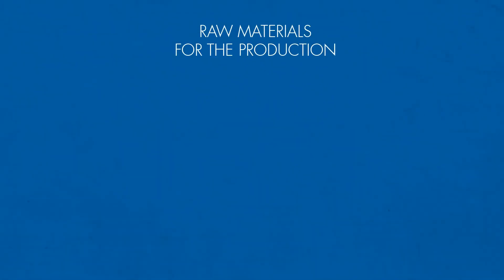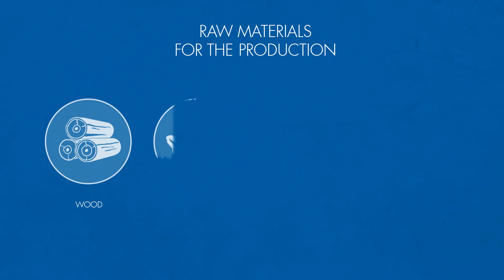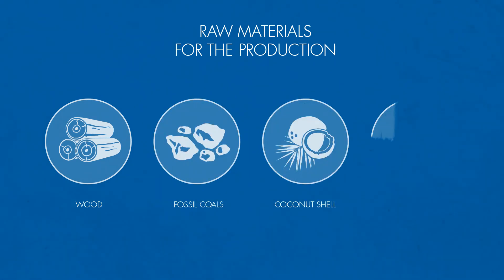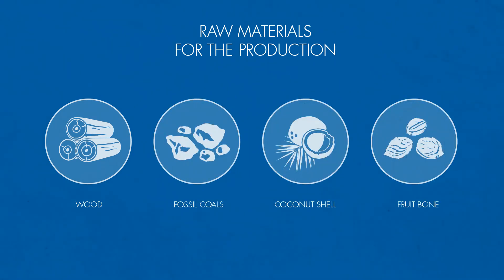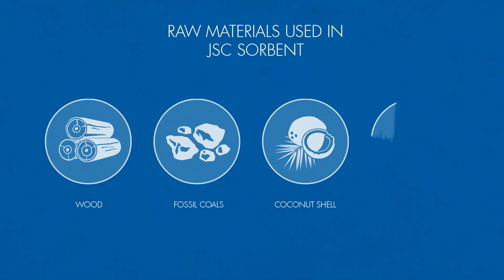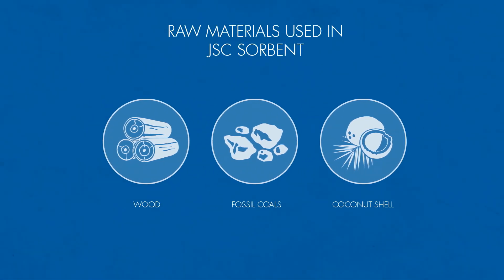The most common materials for the production of activated carbon are wood, fossil coals, coconut shell, and fruit bone. Currently, JSC Sorbent produces active carbon on coal, wood, and coconut bases.